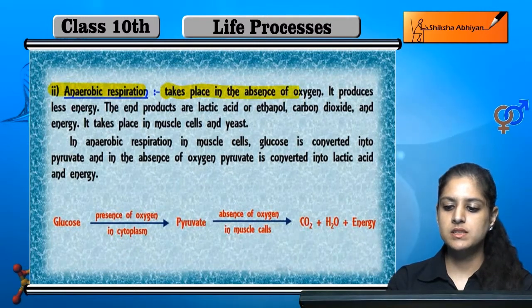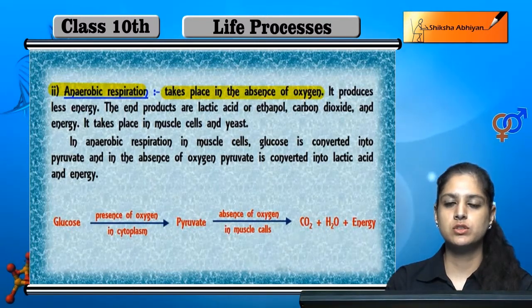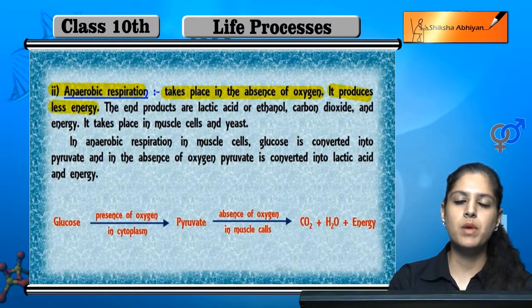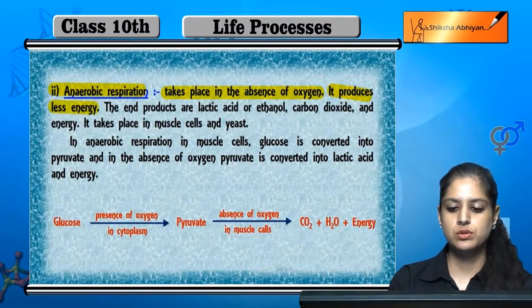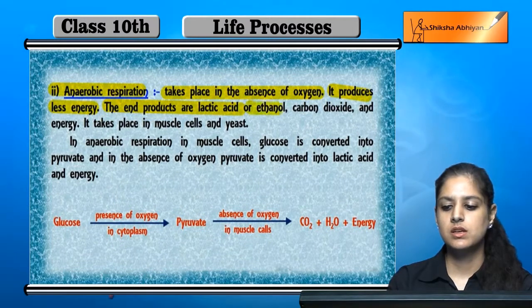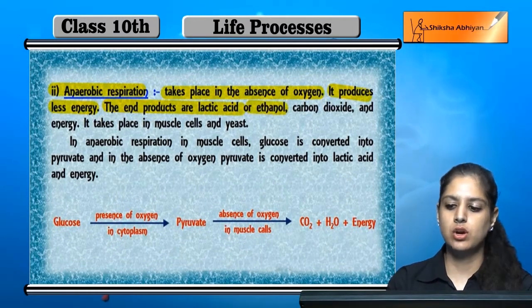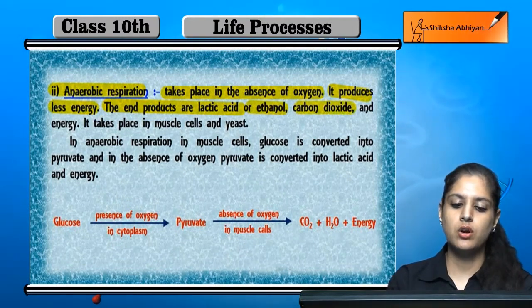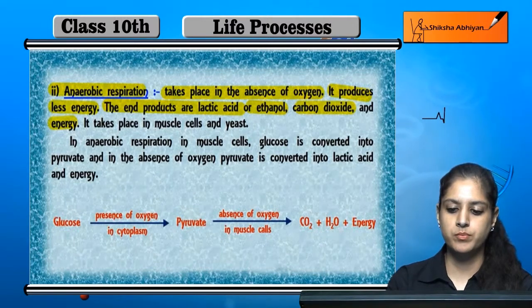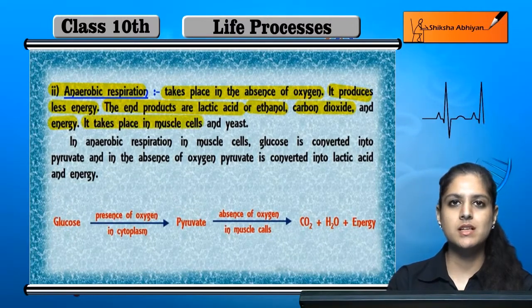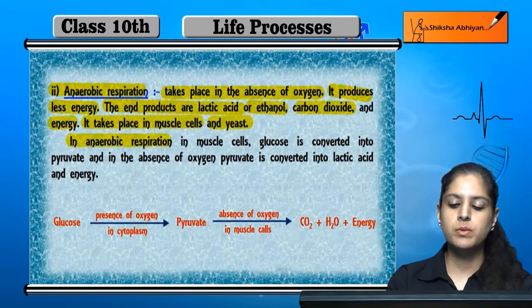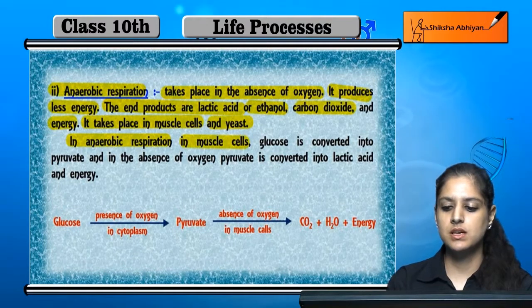The second type is anaerobic respiration. It takes place in the absence of oxygen. Less energy is produced. The end products are lactic acid, ethanol, carbon dioxide, and energy. Anaerobic respiration occurs in muscle cells and yeast.